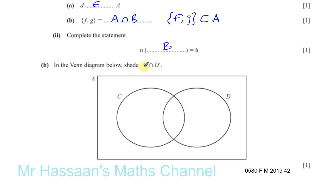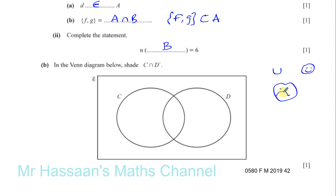Then you have to shade C intersection D complement. The intersection means what's common to both these two parts. I like to think of it this way: if you have a union, I think of that as a smiley face. And if you have an intersection, I think of that as a sad face — he's strict, he doesn't smile. So you have to be in both C and also outside of D in order to be included.